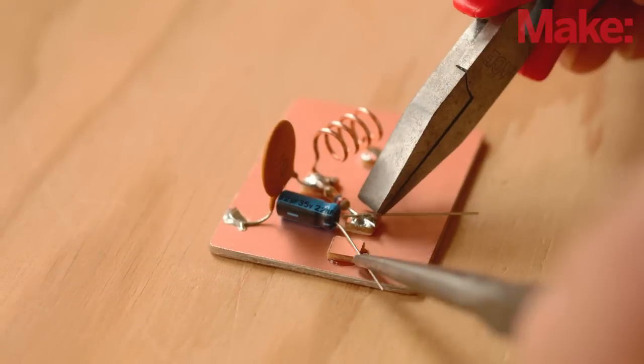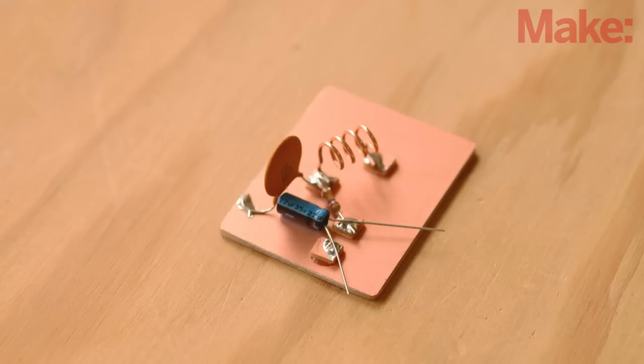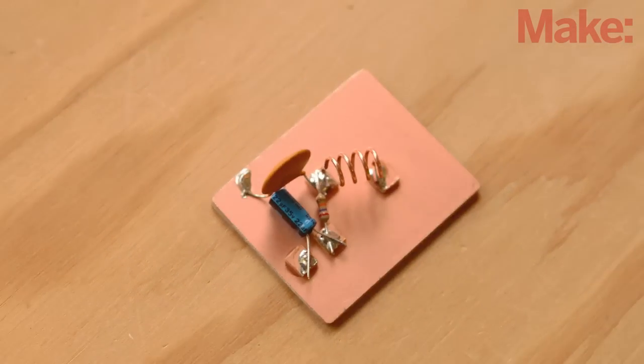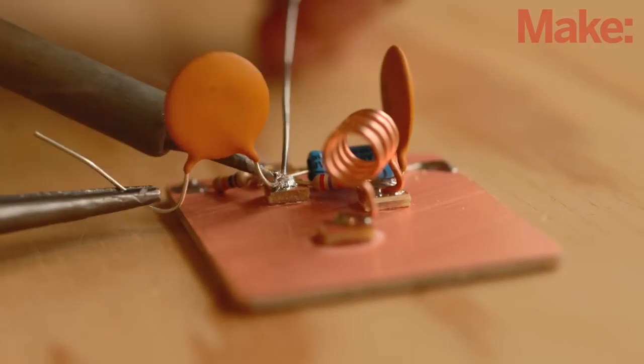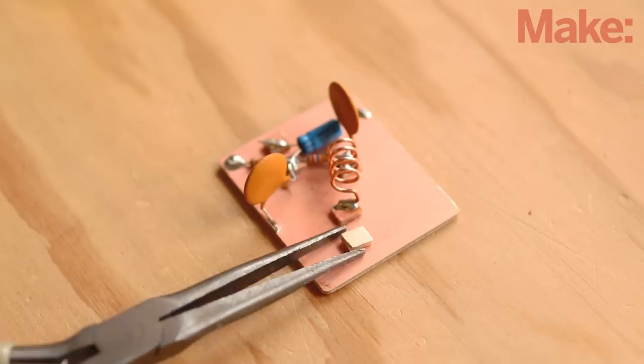Remember that electrolytic capacitors are polarized so make sure you've got this one turned the right way. A 10 kilo ohm resistor and another 0.01 capacitor, and then the final pad.